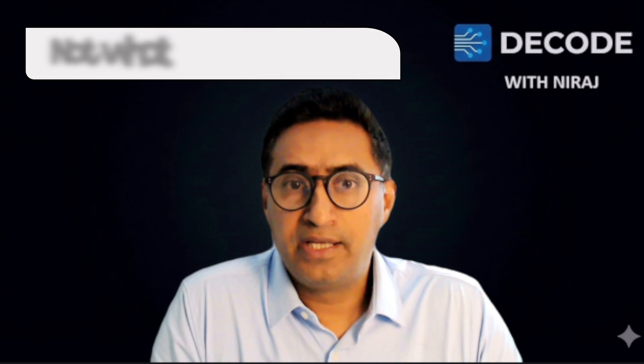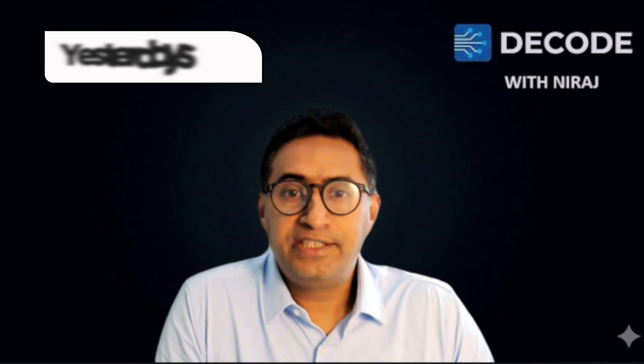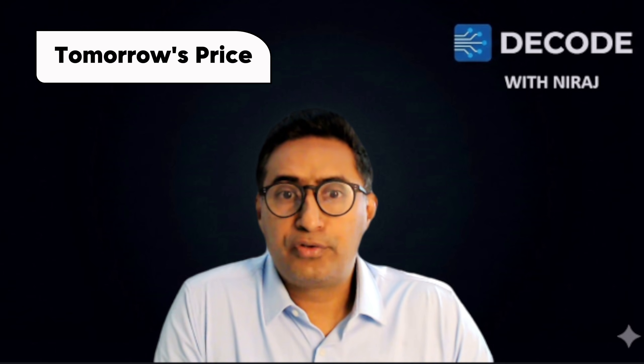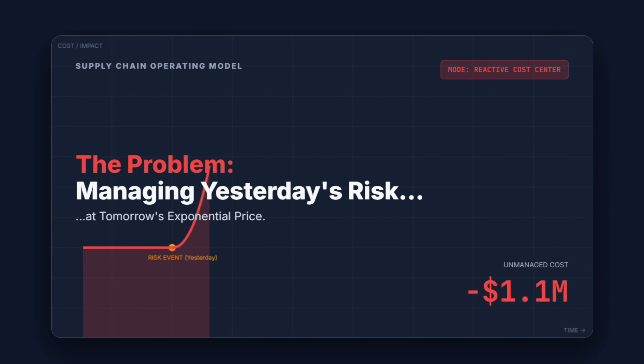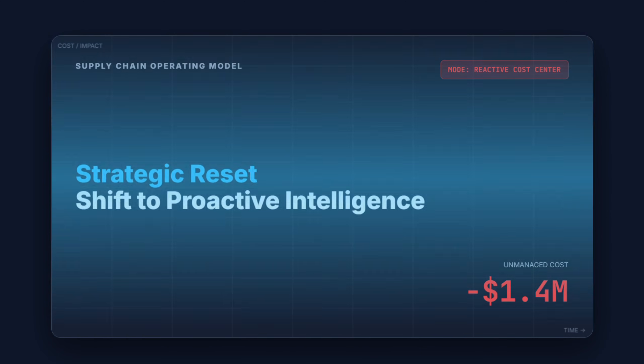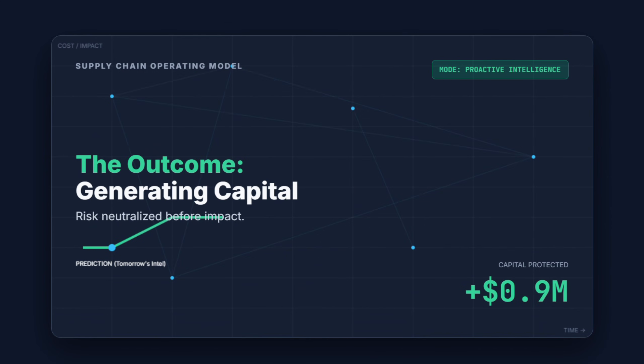Your traditional forecasting models, reliant on historical demand and lead times, are like driving using a rearview mirror — they show you what happened, not what is about to happen. The problem is you're managing yesterday's risk at tomorrow's exponentially higher price. We need a strategic reset that moves the supply chain from reactive cost center to proactive intelligence that protects and generates capital.